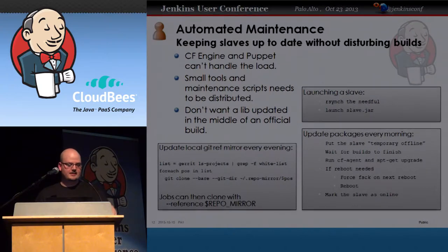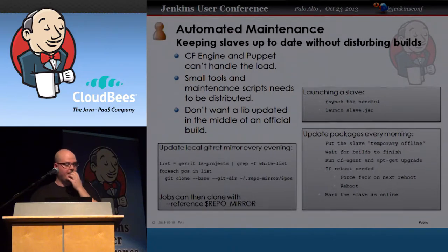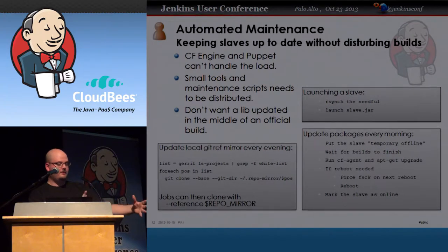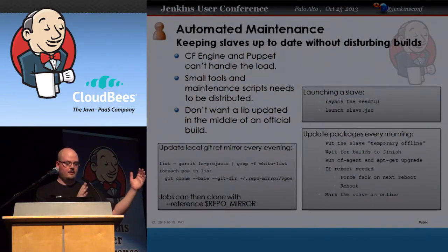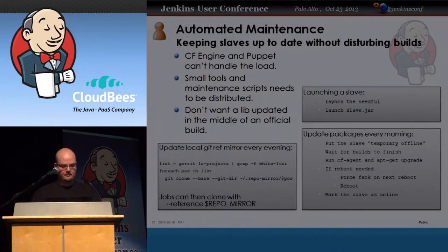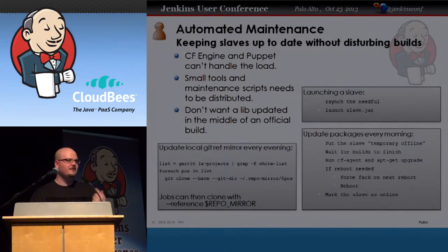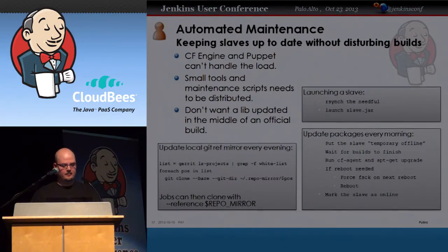When we launch the slave, we use the 'execute command on master' setting. We have a directory on the master containing scripts, Java versions, and other small necessities, which are rsynced over to the slave before launch, and then it executes java -jar slave.jar. So every time a slave is launched, the maintenance scripts and everything needed are synced out to it before it starts.